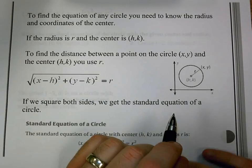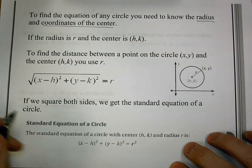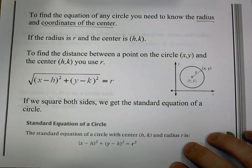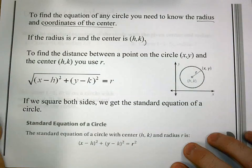To find the equation of any circle, you need to know two things: the radius and the coordinates of the center. If I was to describe a circle on a graph to you, I'd tell you where the center is and how big the radius is. That's the common link I can use to describe any circle. Now, if the radius is r and the center is (h,k)...